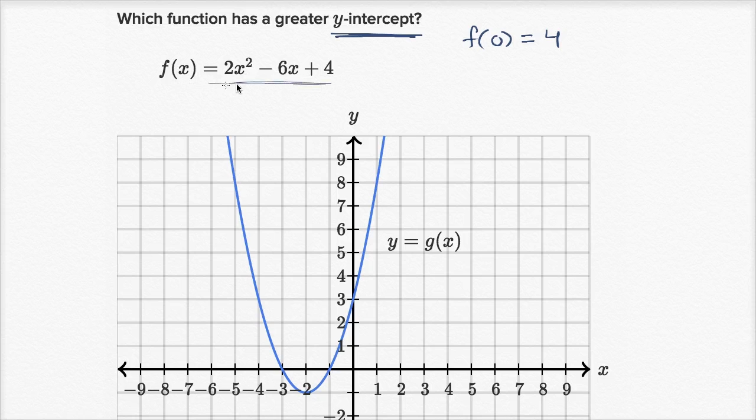So this function right over here has a y-intercept of four. It would intersect the y-axis right over there, while the function we're comparing it to, g of x, we're looking at its graph, y equals g of x, its y-intercept is right over here at y equals three. So which function has a greater y-intercept? Well, it's going to be f of x. f of x has a greater y-intercept than g of x does.